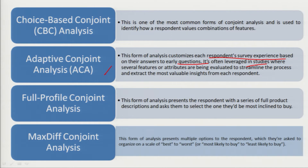Full profile conjoint analysis presents respondents with a series of full product descriptions and asks them to select the one they most prefer and would be most inclined to buy. Max difference conjoint analysis provides multiple options to respondents and asks them to organize these on a scale from best to worst, or most likely to buy to least likely to buy.